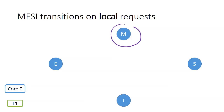Finally, starting from the modified state, core 0 can both read and write without changing the state of the cache line — the cache line remains in the modified state.